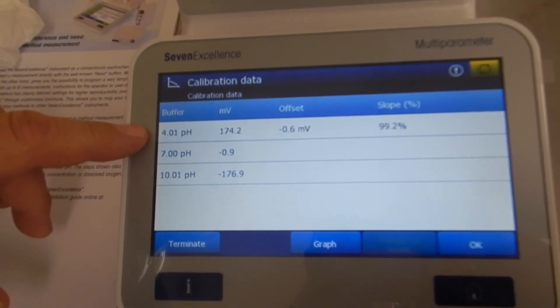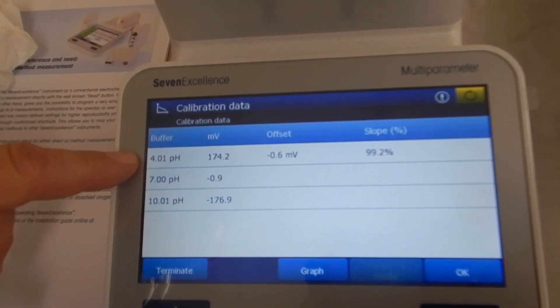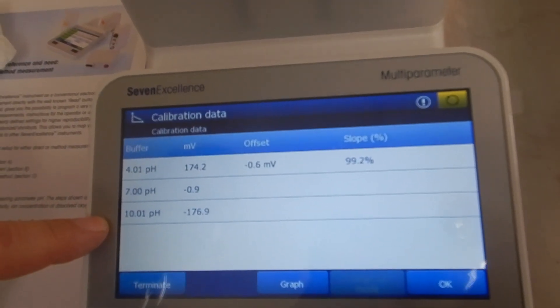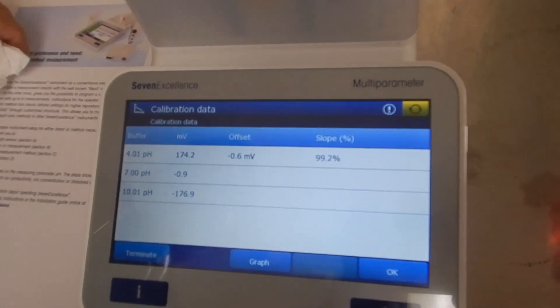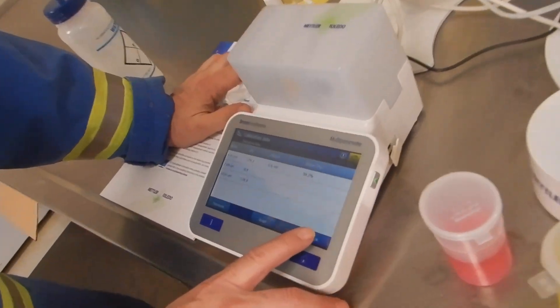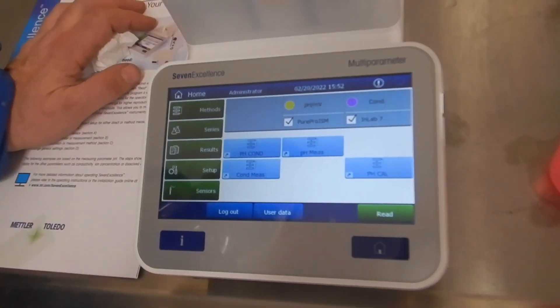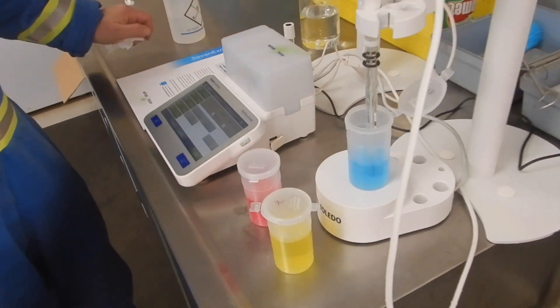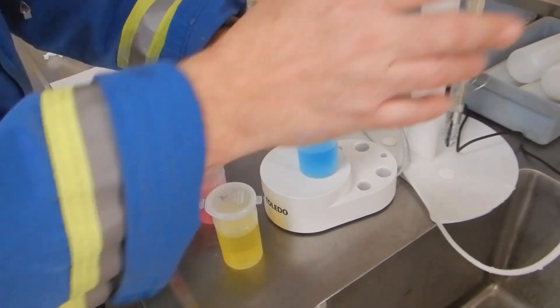174 millivolts being really active with negative ions and negative 176 being the opposite, lots of positive ions. Just hit the okay button and it's taken the latest cal. Once you're satisfied with that calibration,